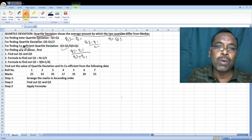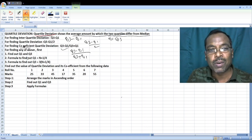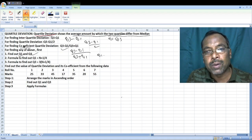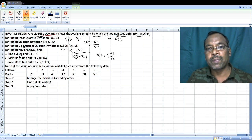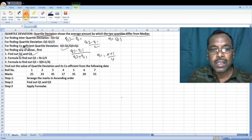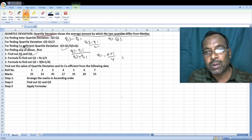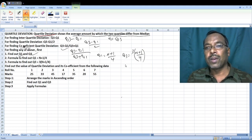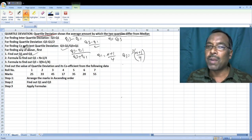For finding any average, the three integrals - what is the value? First one, Q1 is equal to n plus 1 by 4. Q3 is equal to n plus 1 by 4 into 3. That is all.